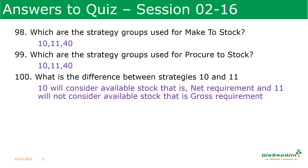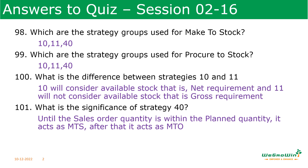What is the difference between strategies 10 and 11? Strategy 10 is called net requirement planning — it considers the available stock. Whereas strategy 11 is called gross requirement planning, where it does not consider the available stock. What is the significance of strategy 40? Strategy 40 will act as both MTS and MTO. When orders are less than the plan, the system will plan for the PIR (planned quantity) — that is make to stock. When the order is more than this plan, the system will plan for the orders, acting as make to order.